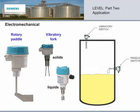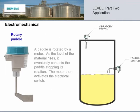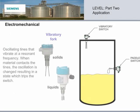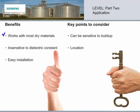Electromechanical level devices use a change in mechanical activity to detect level. The rotary paddle is rotated by a motor. As the level of the material rises, it contacts the paddle and stops the rotation, and the motor then activates an electrical switch. Vibratory forks have oscillating tines that vibrate at a resonant frequency — when material contacts the tines, the oscillation change trips the switch. Electromechanical devices work with most dry materials, even those with very low densities. Dielectric constant does not affect their operation, and they are easy to install and commission. Note that they can be sensitive to buildup, and make sure they are installed in a location away from adverse material flow, like inflow areas.